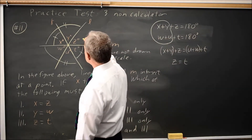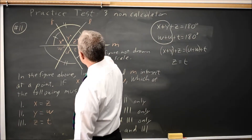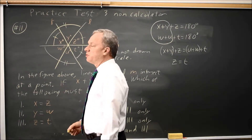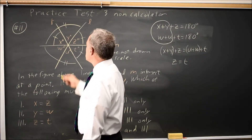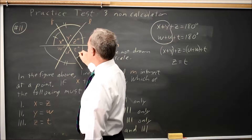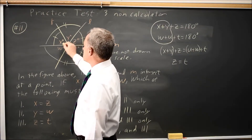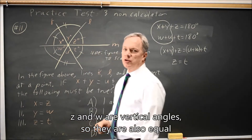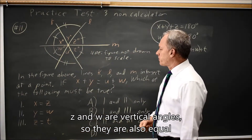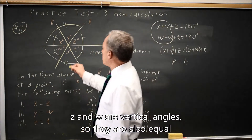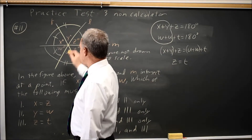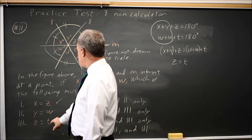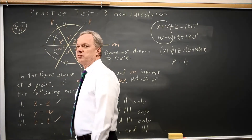That means this angle here is equal to t, but t is already equal to x. So z, t, and x are all equal, and since z and w are also equal, all four of those have to be equal to each other. So we know that x does equal z, and z does equal t — we just proved that.